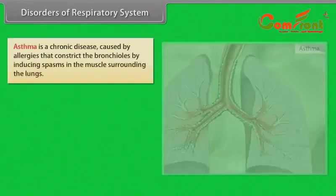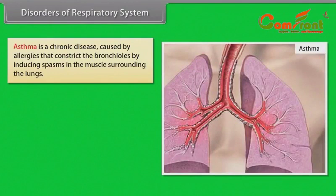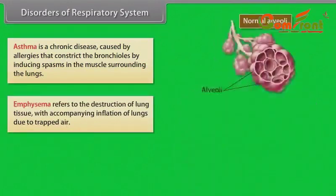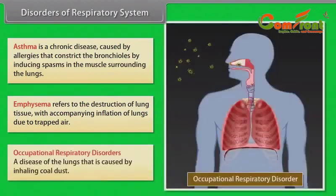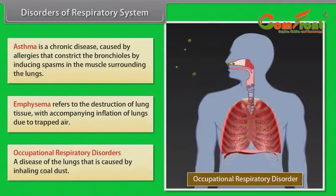Disorders of the respiratory system: Asthma is a chronic disease caused by allergies that constrict the bronchioles by including spasms in the muscles surrounding the lungs. Emphysema refers to the destruction of lung tissue with accompanying inflation of the lungs due to trapped air. Occupational respiratory disorders include diseases of the lungs caused by inhaling coal dust.